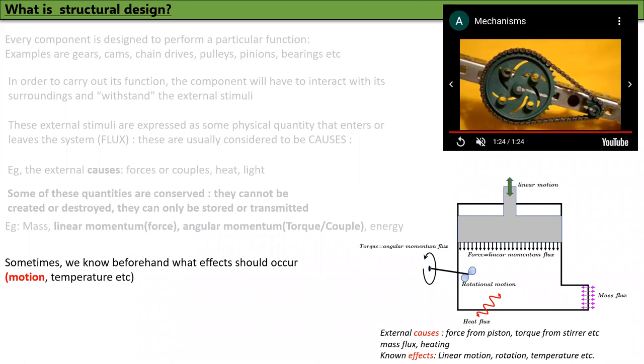Sometimes we know beforehand what effects should occur. For example, motion may be known, temperature may be known. In this system that we are looking at, the linear motion of the piston may be known, the temperature of the fluid inside this chamber may be known, or maybe the rotational motion may be known. So these are known effects.